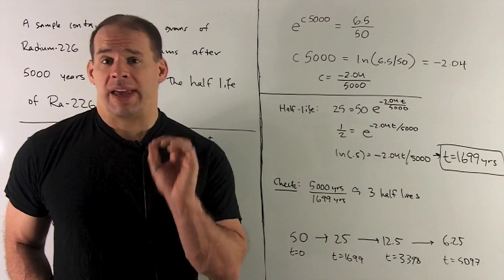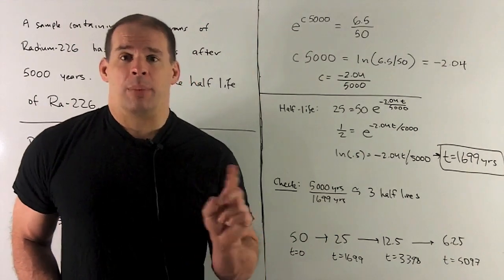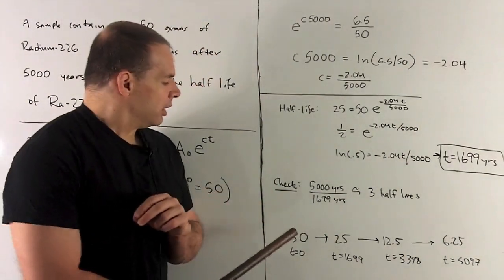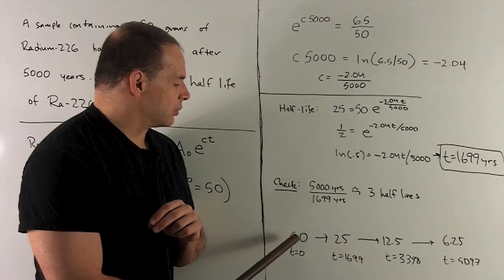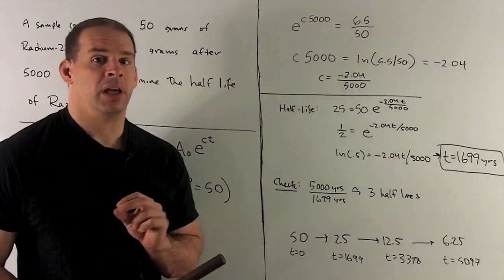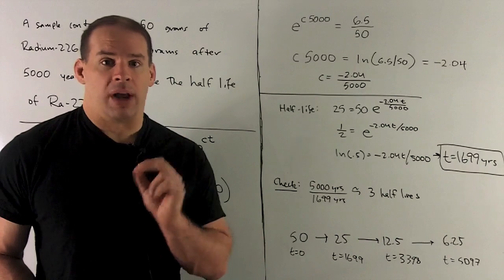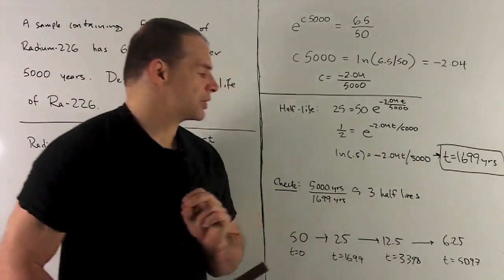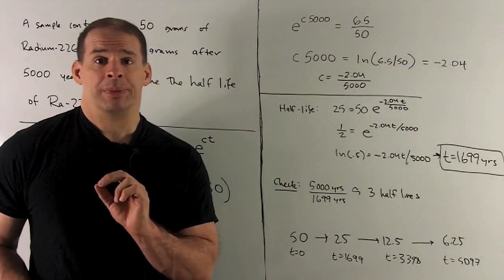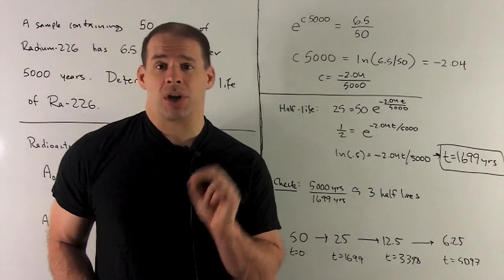We could check this. The idea is to let a few half-lives pass and see what happens to the amount. If we wind up getting in the ballpark of 5,000 years, the amount should be around 6.5. We let one half-life pass — starting at t=0 with 50g, at 1,699 years we have 25g. One more half-life: t is 3,398 years, and half of 25 is 12.5 grams. One more half-life: that gives 5,097 years, and half of 12.5 gives 6.25 grams — close to our 6.5 grams.